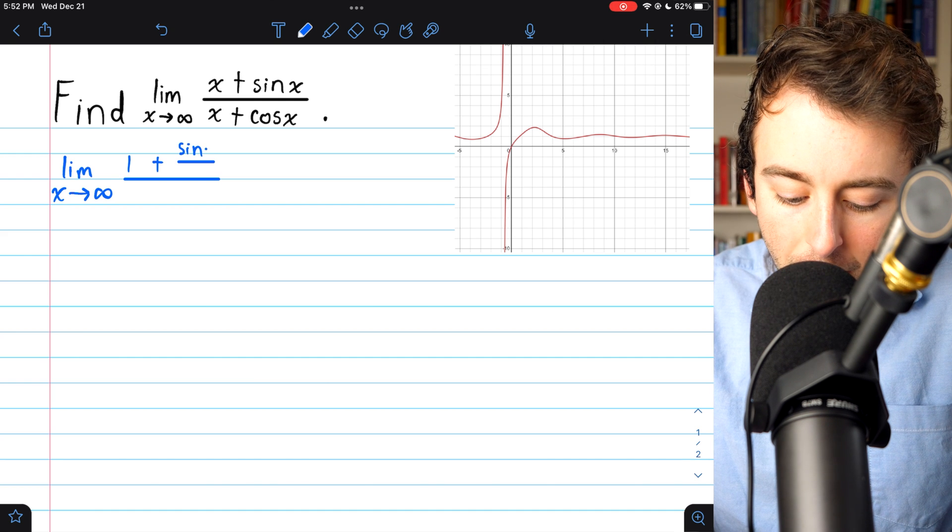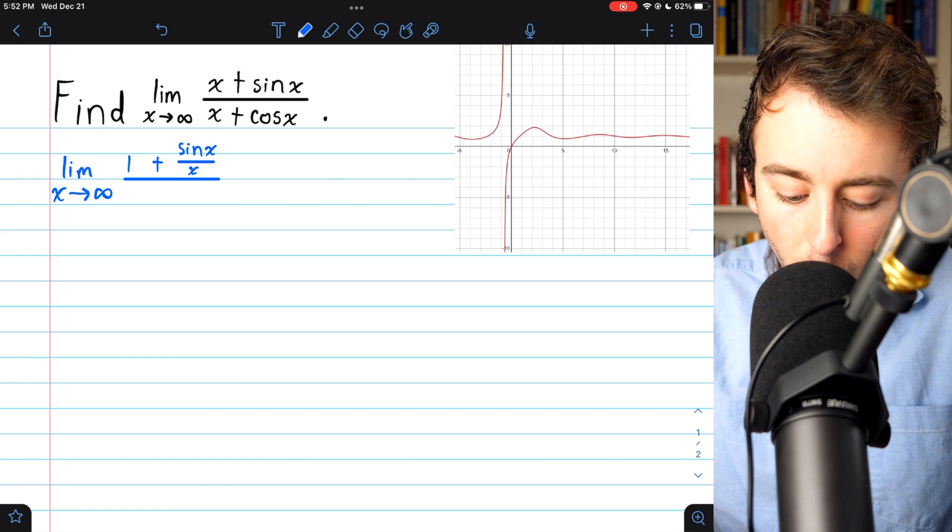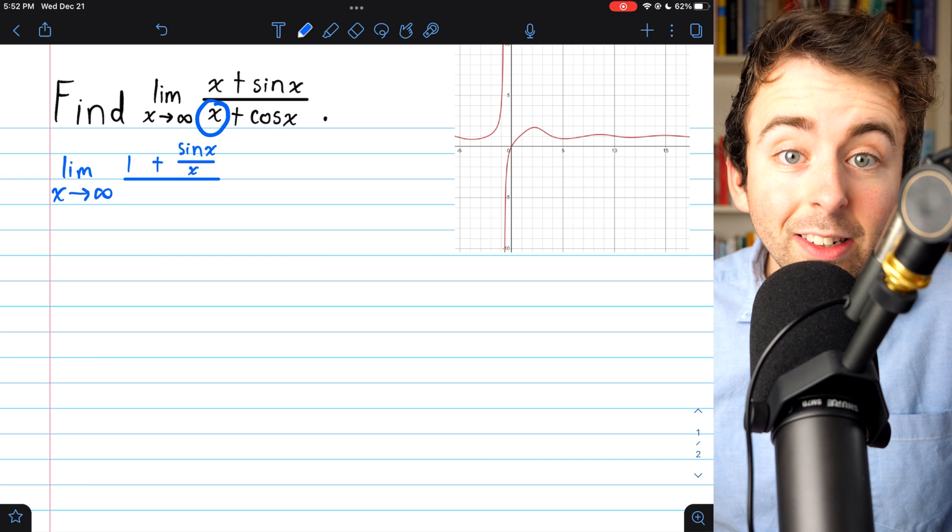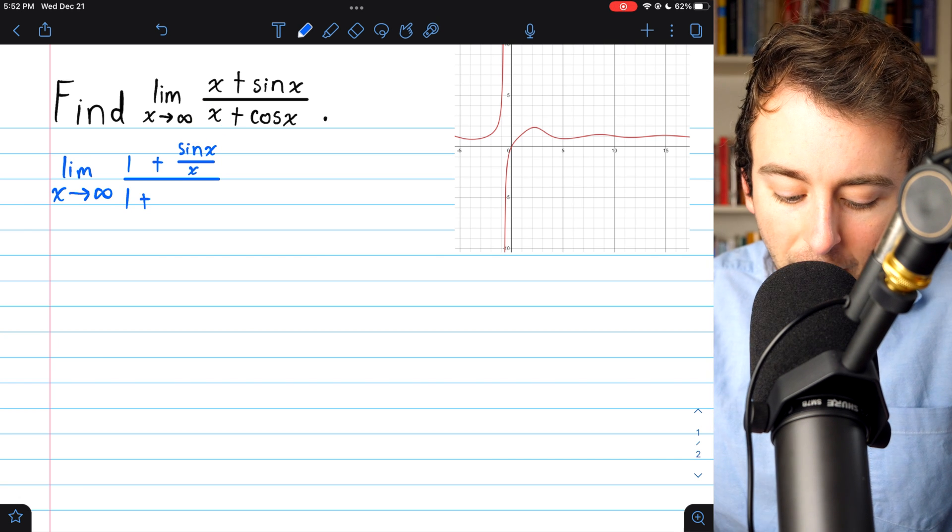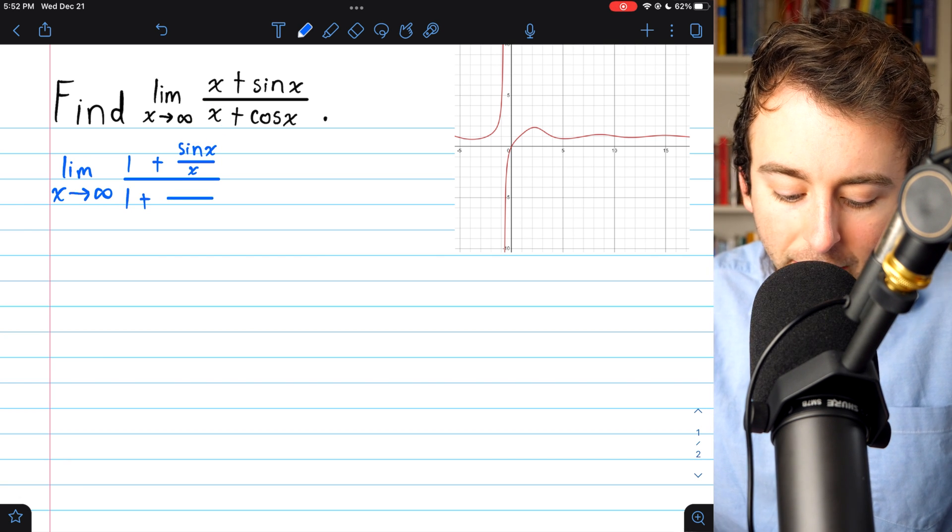In the denominator, again, x becomes 1, because we're dividing the top and the bottom by x. And similarly, cosine x becomes cosine x over x.